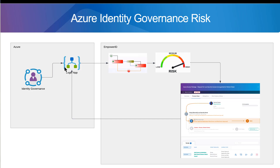In our example here, we deployed a logic app in our Azure tenant. We set up some access packages. The logic app is tied in as an extension to the event for requesting access, and what it does is it calls out and runs an EmpowerID workflow — an EmpowerID SaaS on-premise, wherever it might be. The EmpowerID workflow runs the request through a risk analysis, which evaluates all of the existing access that person has.